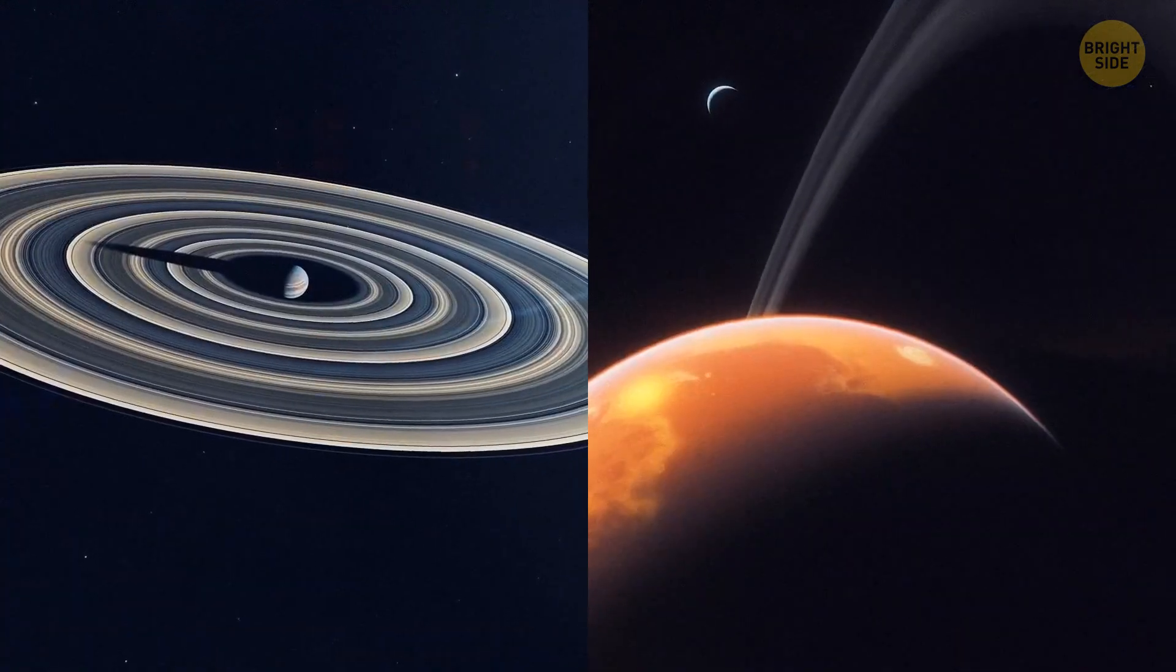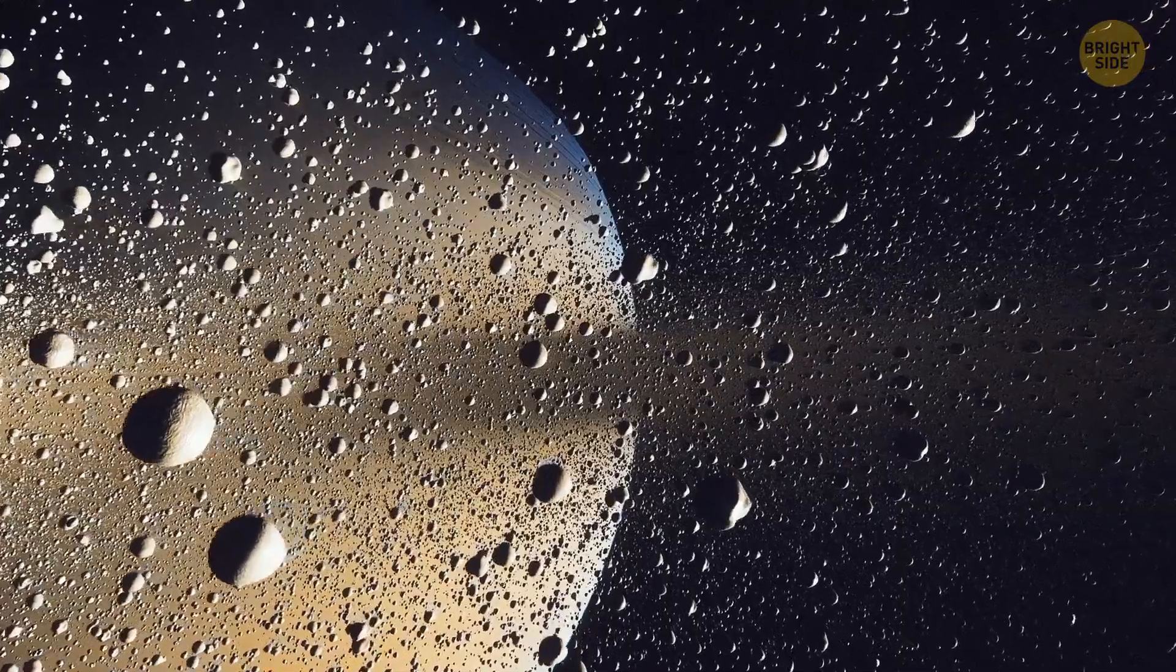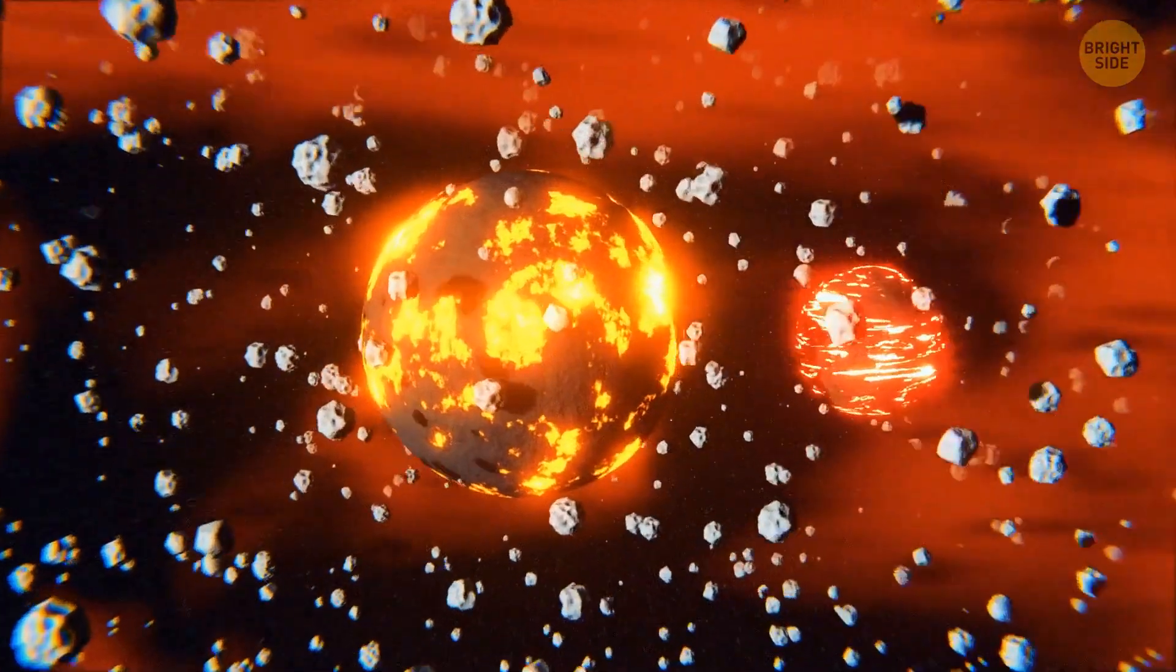There are two theories about how rings can appear around a planet. They might be just some material left from the times when the planet was forming. Or they may be the remains of a moon that got destroyed by a collision with some space body.